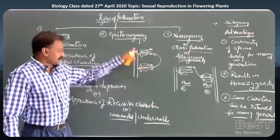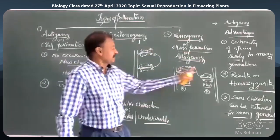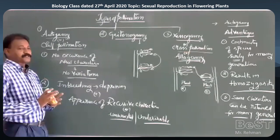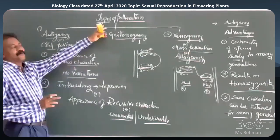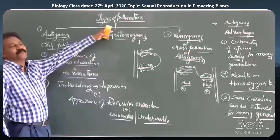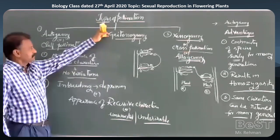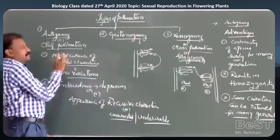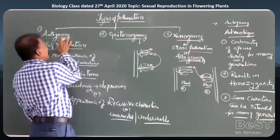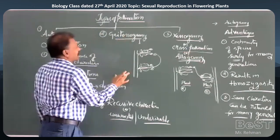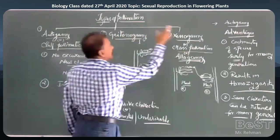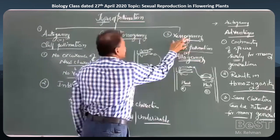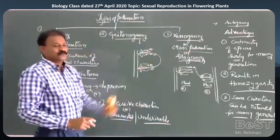Geitonogamy is transfer within the same plant; xenogamy is between different plants. For exam questions — PUC or CET — they may ask: what is pollination and how many types are there, what is autogamy, write a short account, what is the difference between geitonogamy and autogamy, what is geitonogamy, what is the difference between geitonogamy and xenogamy, differentiate autogamy and xenogamy.